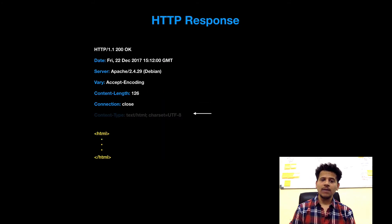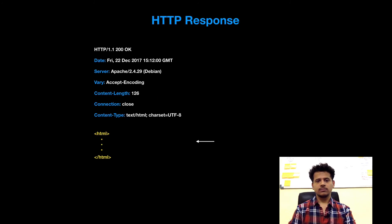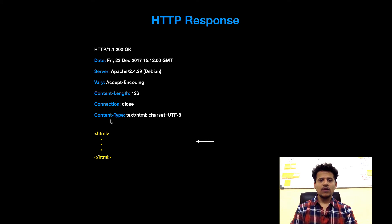Next is the content-type header, which tells us about the type of the message body. In this case the type of the message body is HTML. In some cases it might be in a different format such as PDF, etc. After these HTTP response headers there is one empty line, and then this is the actual message body of the HTTP response.